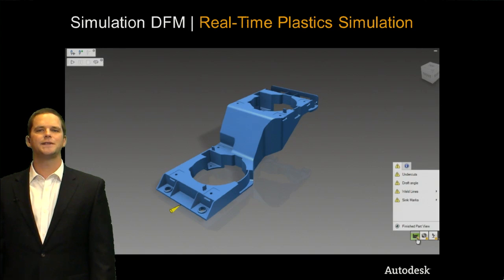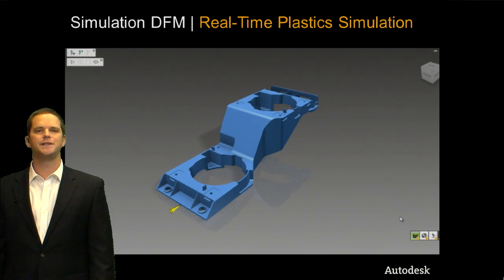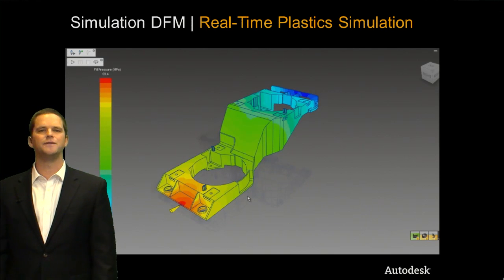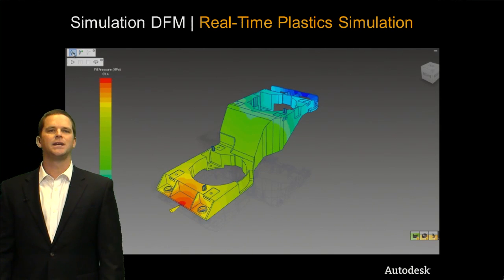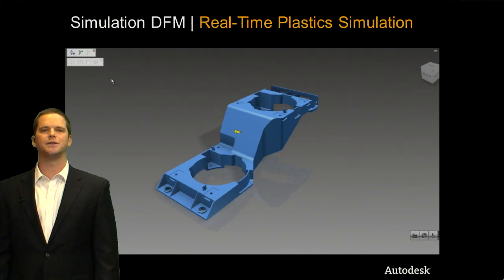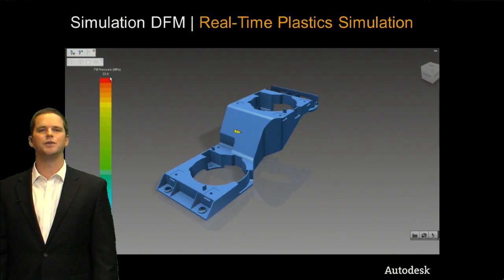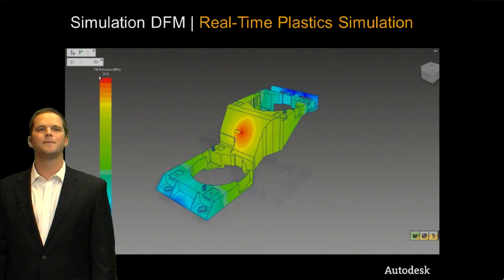The last thing for manufacturability is that you can actually see the injection pressure required to fill the part. You can move this injection location around so you can play with different scenarios to see the effects on how much pressure is going to be required.